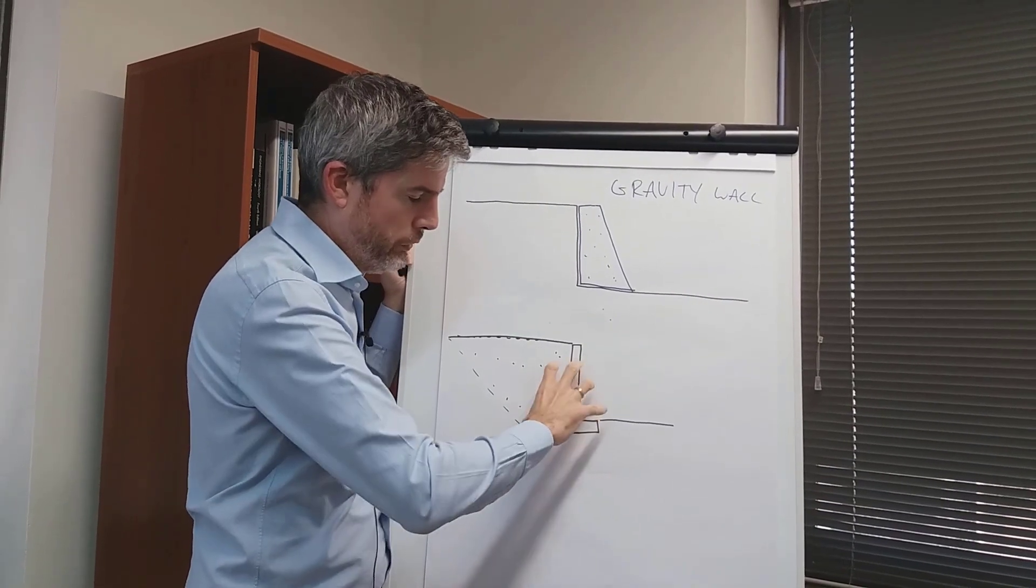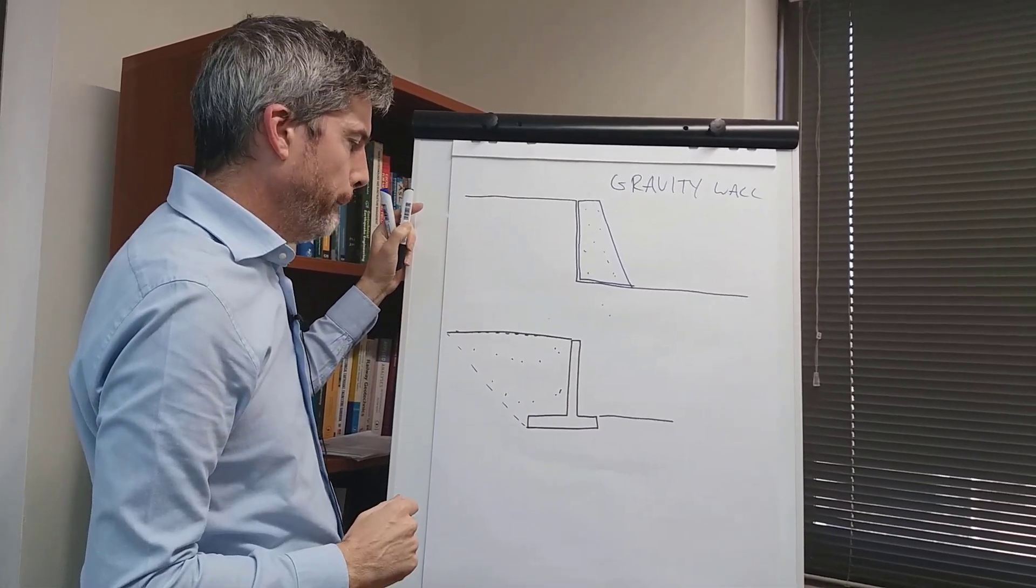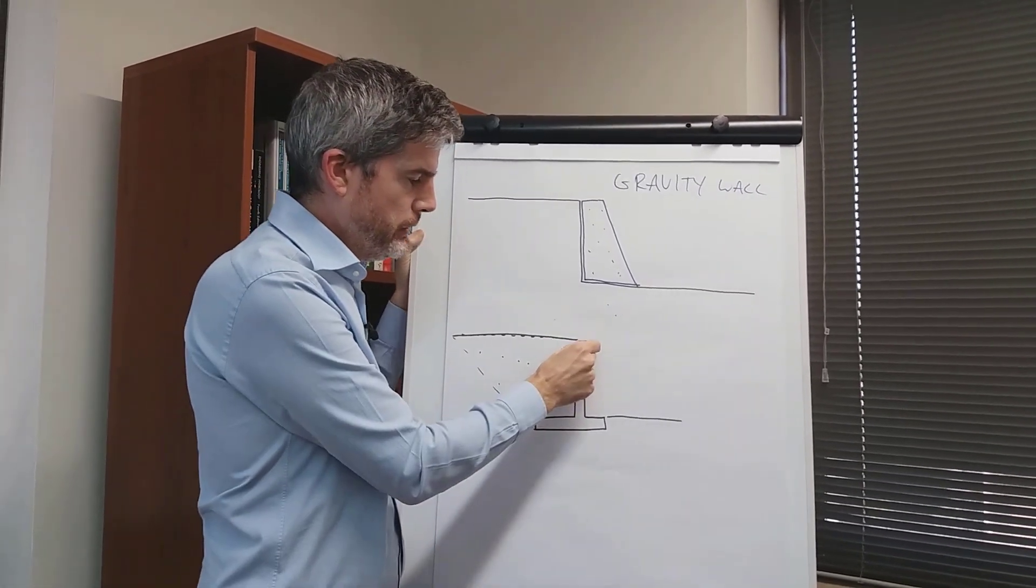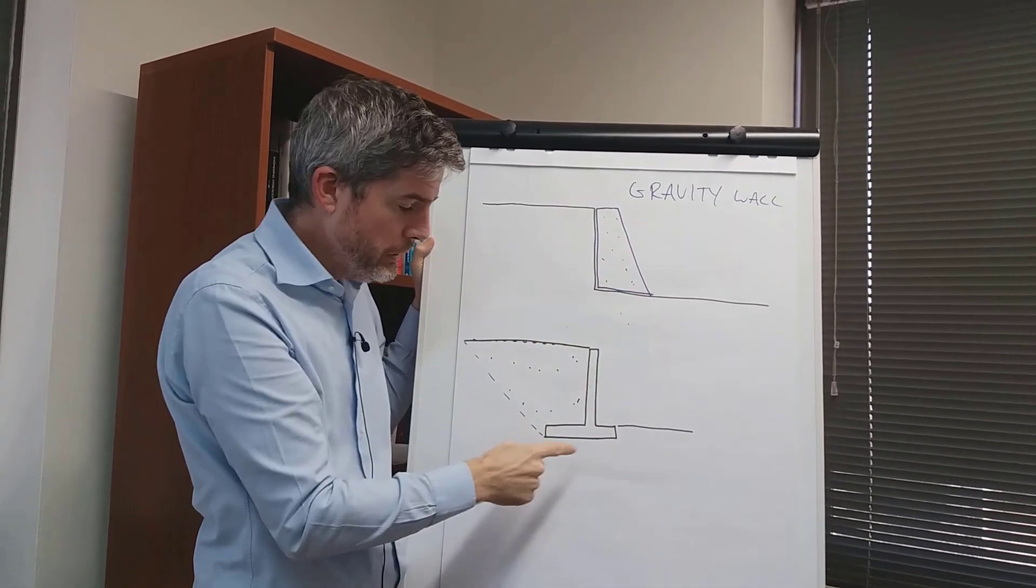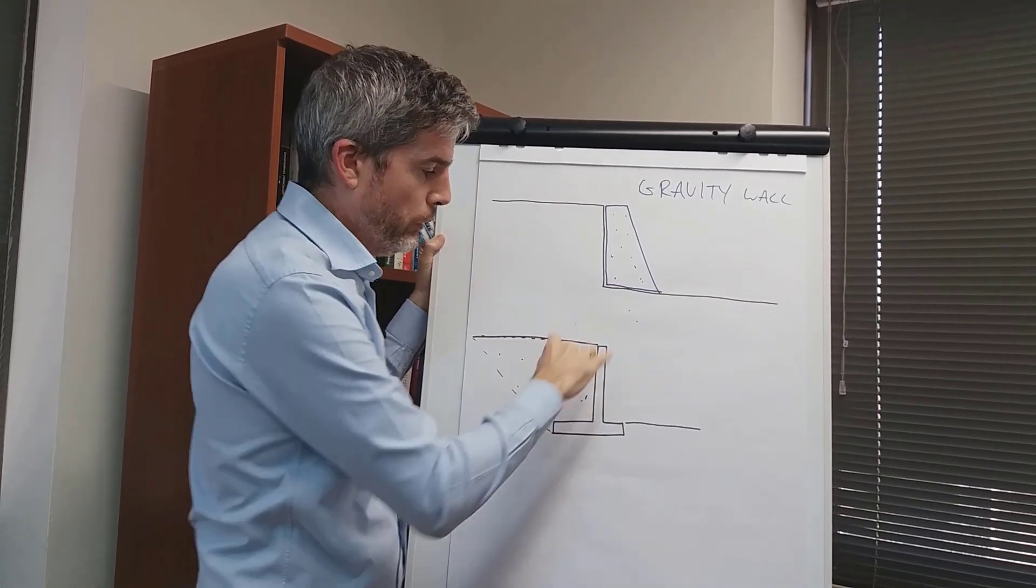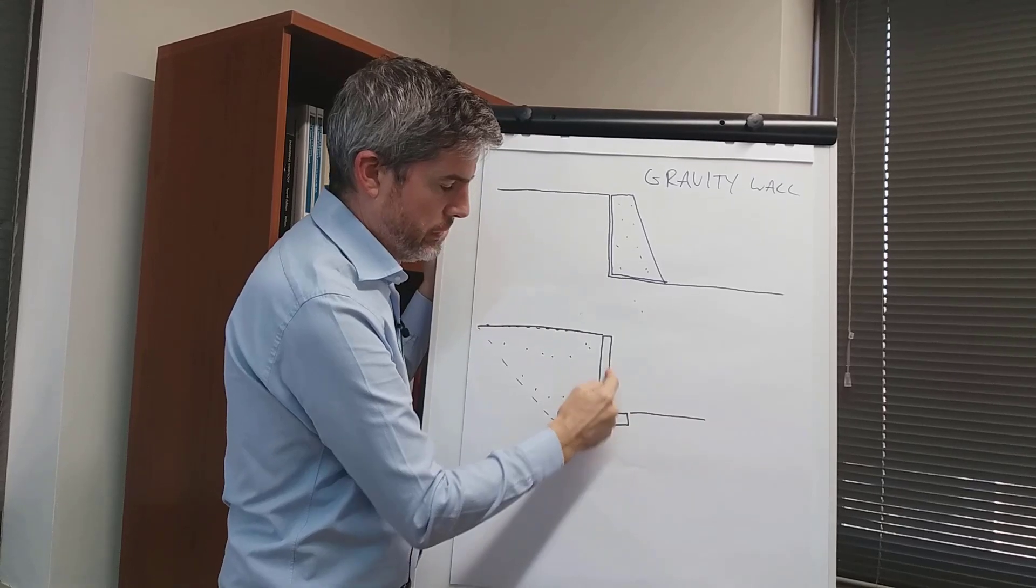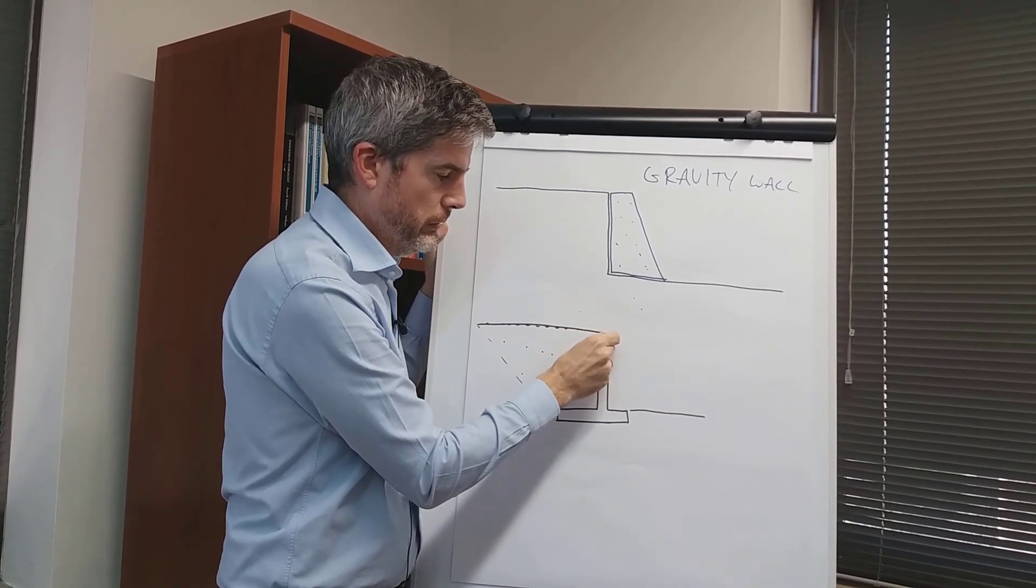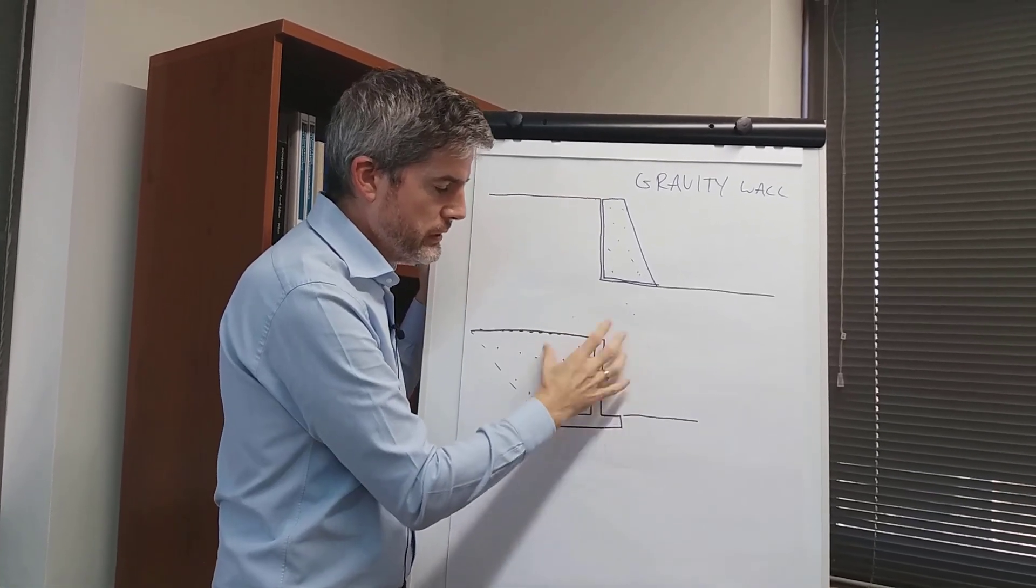The same soil that applies the horizontal pressure is also applying its vertical weight on the base to prevent rotation. There's also some bearing resistance, particularly at the front of the wall from the soil here, that also helps to stop rotation. Advantages of this type: it doesn't take up much space.